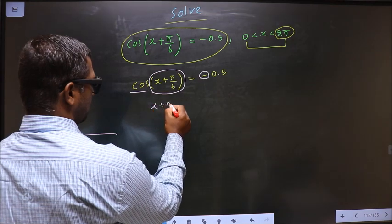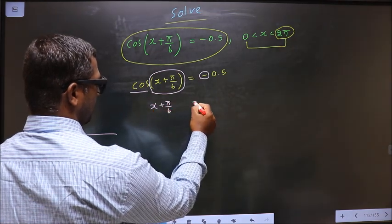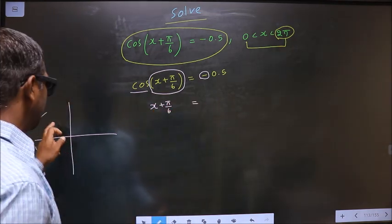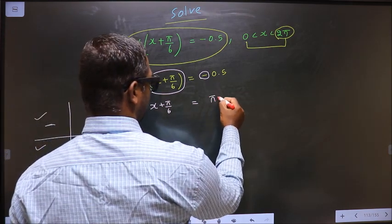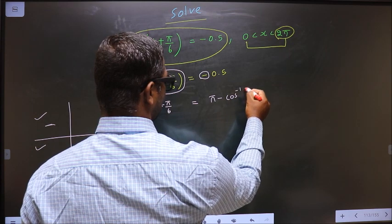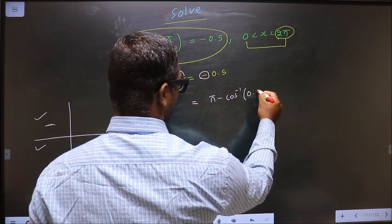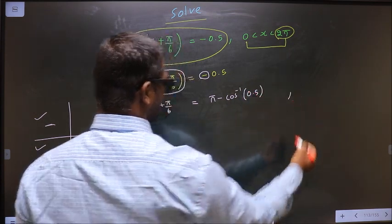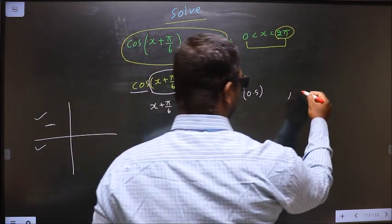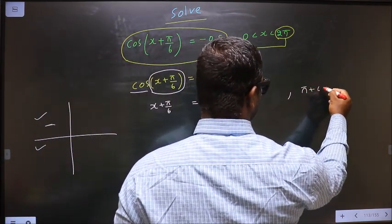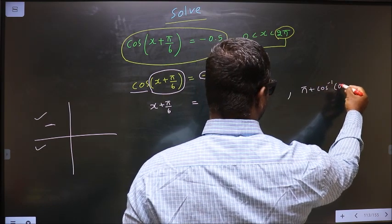So x + π/6 equals... To get an angle in the second we should do π - cos⁻¹(0.5). To get an angle in the third we should do π + cos⁻¹(0.5).